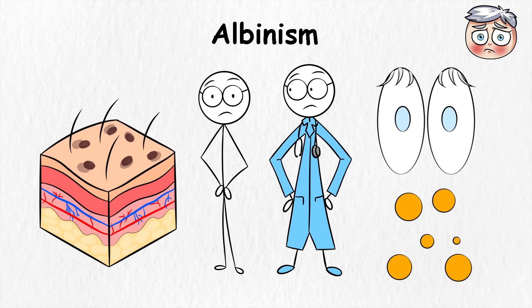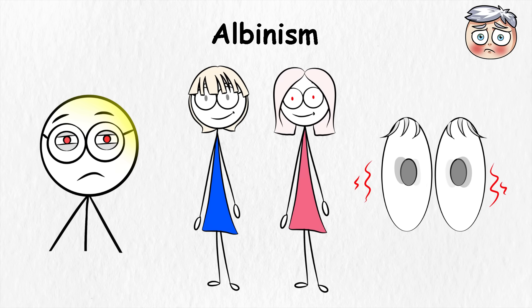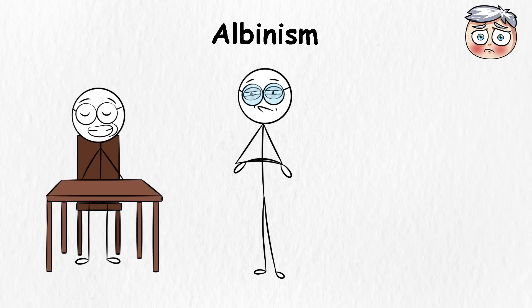Eyes are affected too. Melanin helps the eyes develop normally, so many people with albinism have vision problems, like sensitivity to light, shaky eye movements, or weaker depth perception. Glasses, tinted lenses, and even special seating in classrooms can make daily life easier.